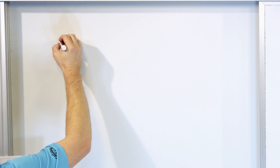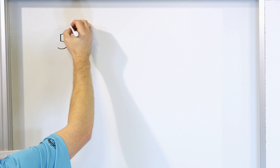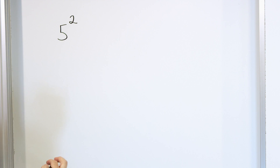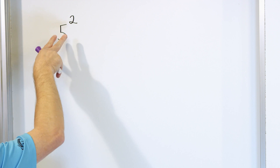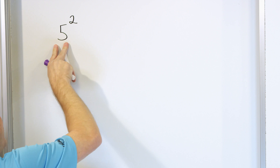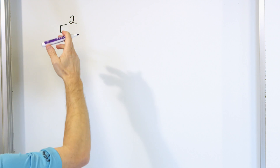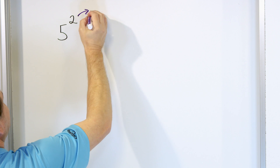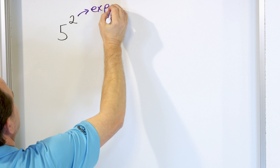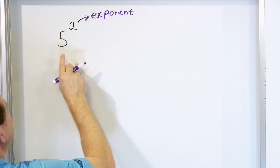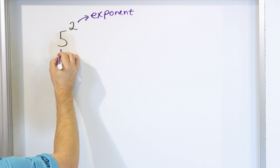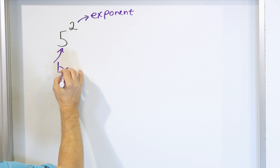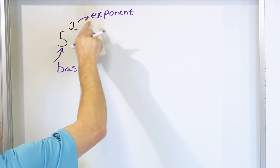So let's take a look at the following. We have the number five, and we will write an exponent as a power of two. When we have something written like this with a number five raised to a power of two, the number two at the top is what we call the exponent. And the big number at the bottom, the thing that you're raising to the exponent, is called the base. So you take a base and you raise it to an exponent.